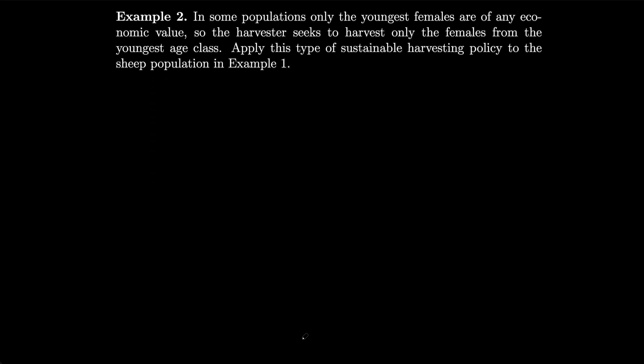In some populations only the youngest females are of any economic value, so the harvester seeks to harvest only the females in the youngest age class. Let's apply this type of sustainable harvesting policy to the sheep population from the previous example. First, let's discuss the net reproduction rate.